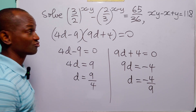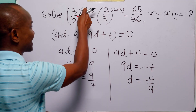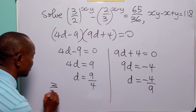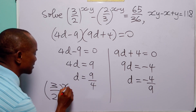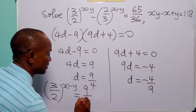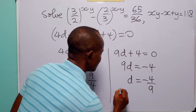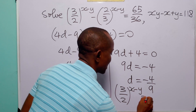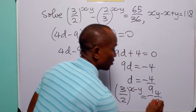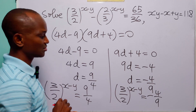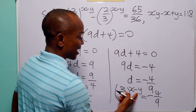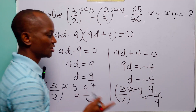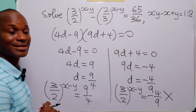But remember that 3 over 2 to the power x minus y is what we call d. So this means that either 3 over 2 to the power x minus y equals 9 over 4, or equals minus 4 over 9. We know that there are no real values of x and y that will give us this negative outcome, so this second equation is unacceptable.